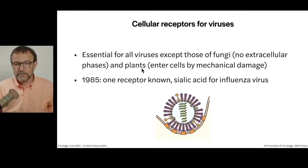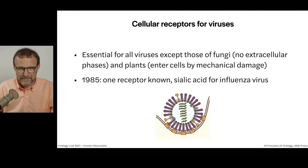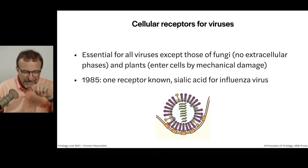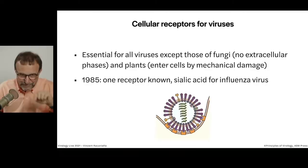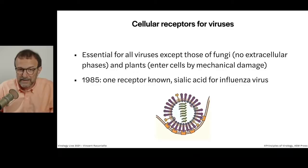Plants don't need receptors either. They enter plant cells by mechanical damage. That could be a vector — there are many pests that suck sap from plants, with a long penetrating structure that pierces the plant cell, going into the space between cells and accidentally introducing viruses. Or mechanical damage from farmers running over plants, or brushing by them, can do that as well.